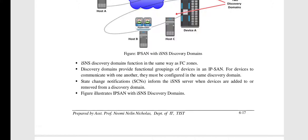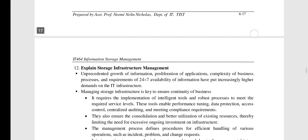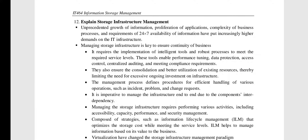iSNS discovery domains function the same as Fibre Channel zones. The discovery domains provide functional groupings of devices — for devices to communicate with one another, they must be configured in the same discovery domain. Notifications called State Change Notifications (SCNs) inform the iSNS server when devices are added or removed from the domain.